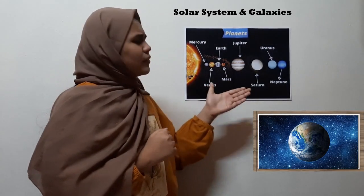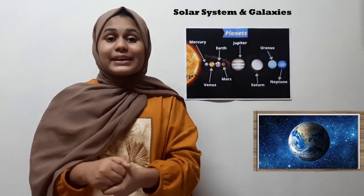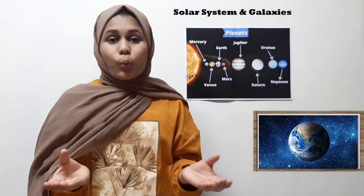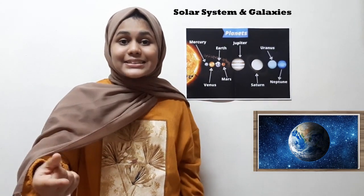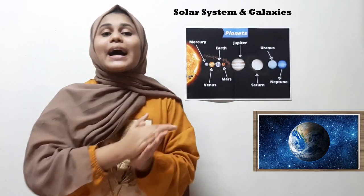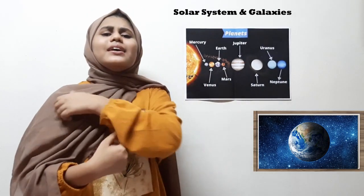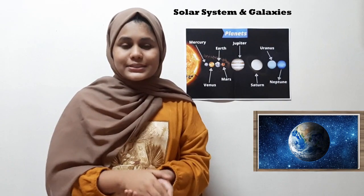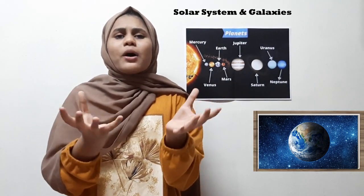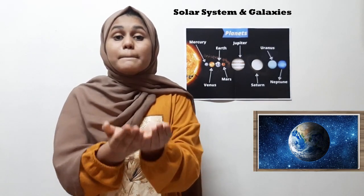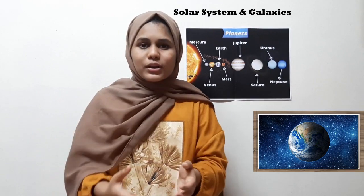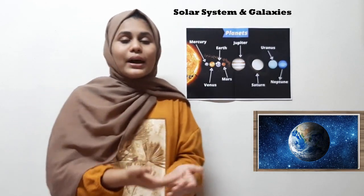Another very unique planet is the Earth — the Earth is the only planet with life in it, because it has air, perfect weather conditions, and water. The Earth is called the blue planet because it has a large amount of water, and all this water makes it look blue when you look at the Earth from space.